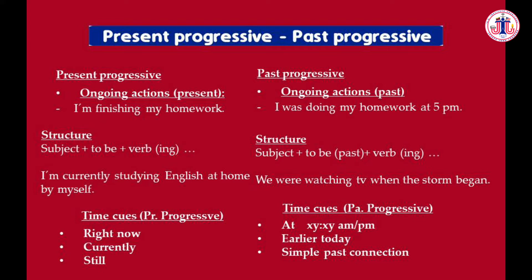The structure of both tenses is very similar. In the present progressive we have: subject + verb 'to be' in the present + verb with -ing. For example: 'I am currently studying English at home by myself.' Notice that 'currently' is a time cue, and time cues can appear between the verb 'to be' and the verb with -ing.